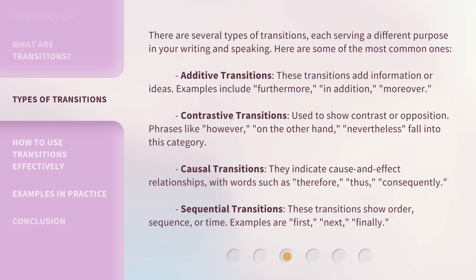Causal transitions indicate cause and effect relationships, with words such as therefore, thus, and consequently. Sequential transitions show order, sequence, or time. Examples are first, next, and finally.